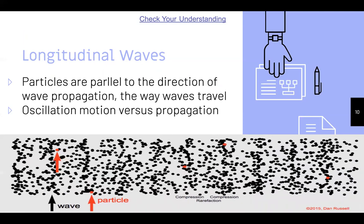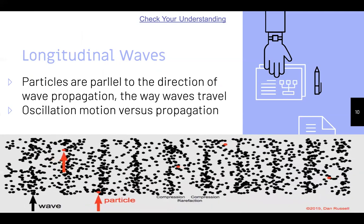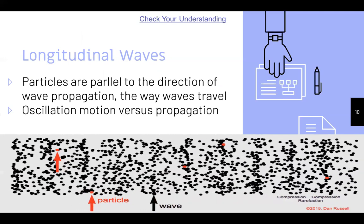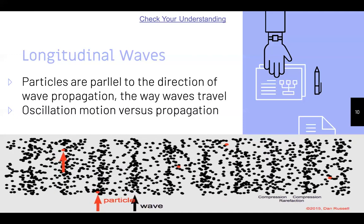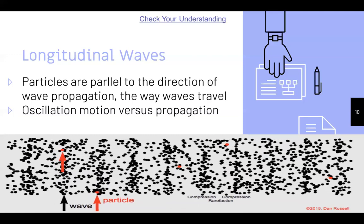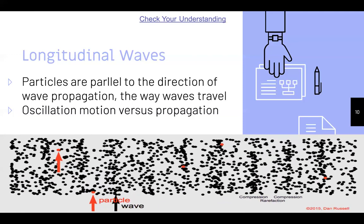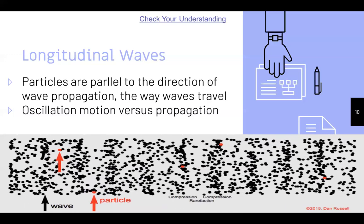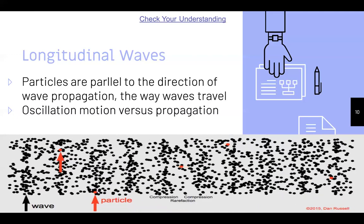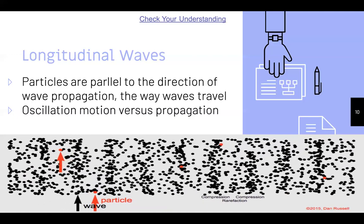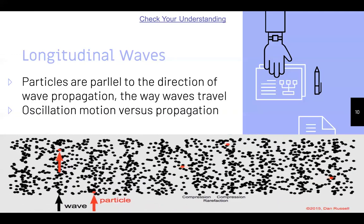Longitudinal waves: particles are parallel to the direction of wave propagation — the way the waves travel. Propagation is the direction waves move, versus the oscillation motion of the particles. If we follow a particle in the interactive animation, the waves are traveling to the right, but the particles are going back and forth — left to right only — staying pretty stagnant and not traveling with the wave.